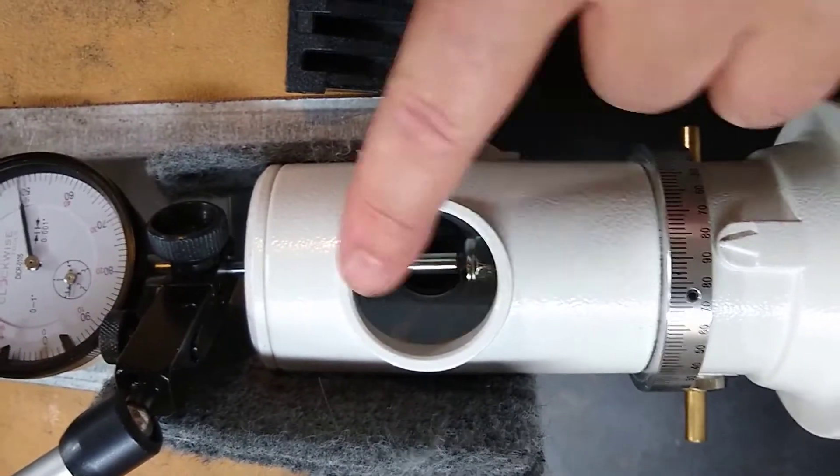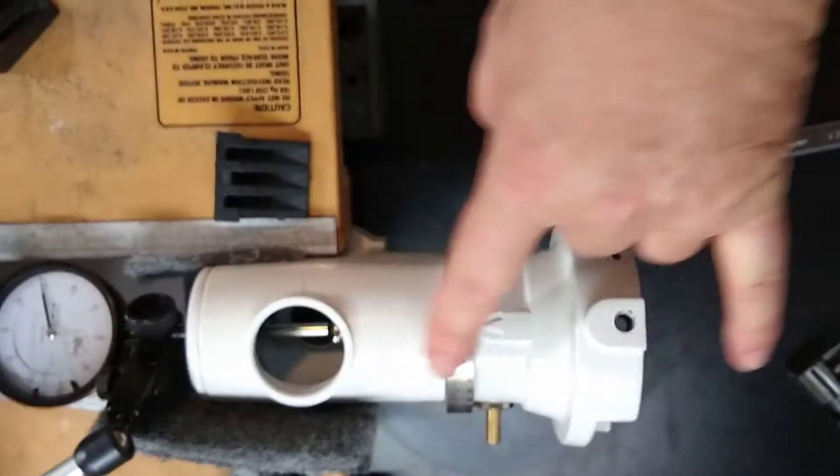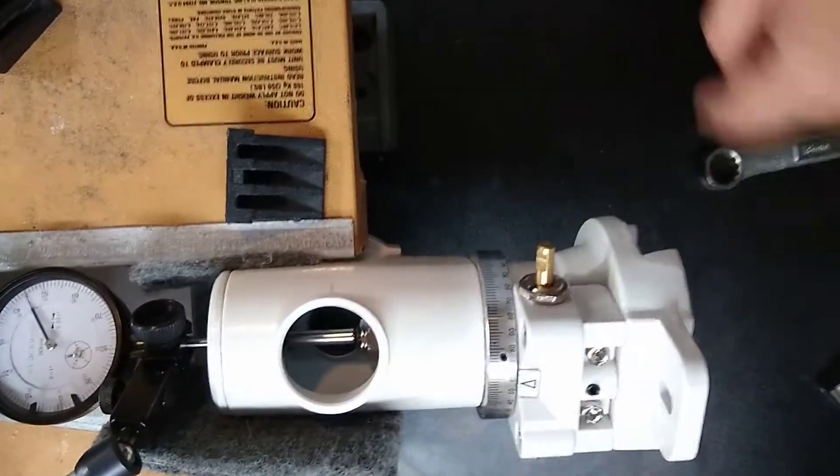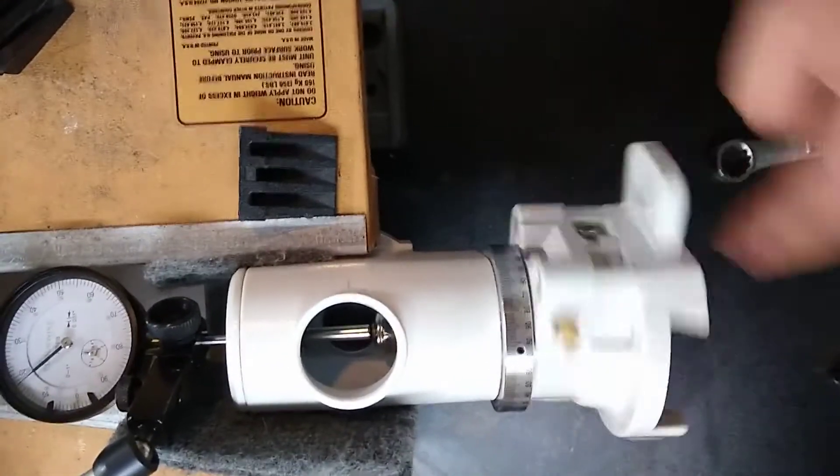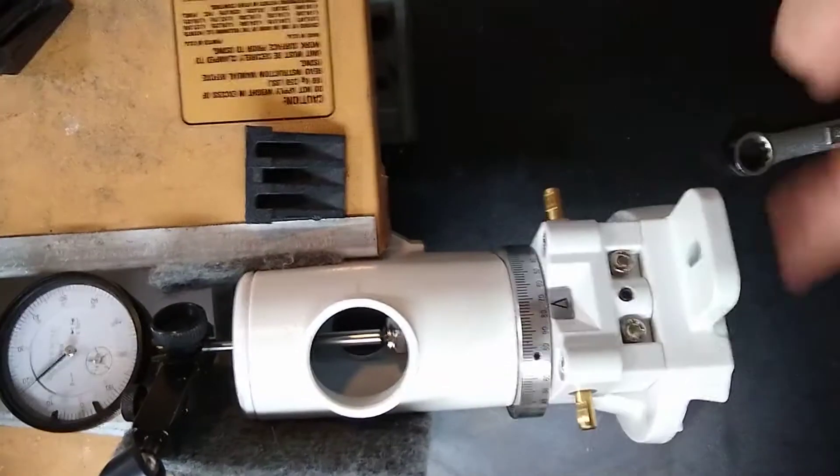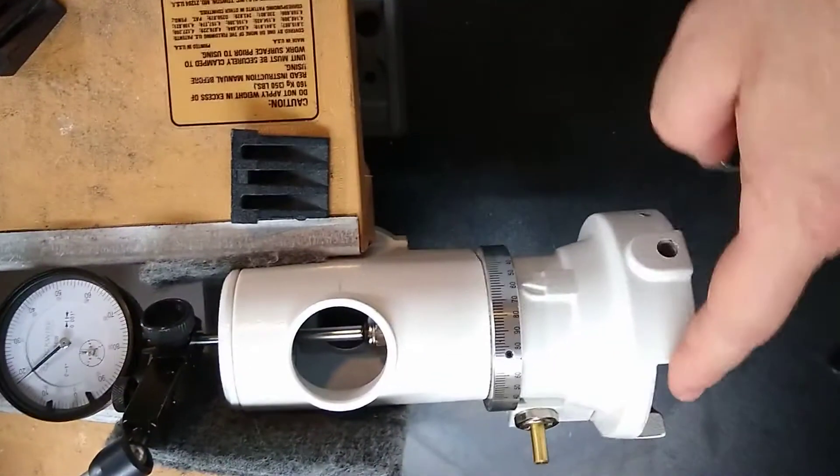What that means is now the axis, the whole assembly is locked in place this way, but it's not so tight that everything is binding. We can see that spins pretty freely. That's much freer than it was originally where we could barely turn it.